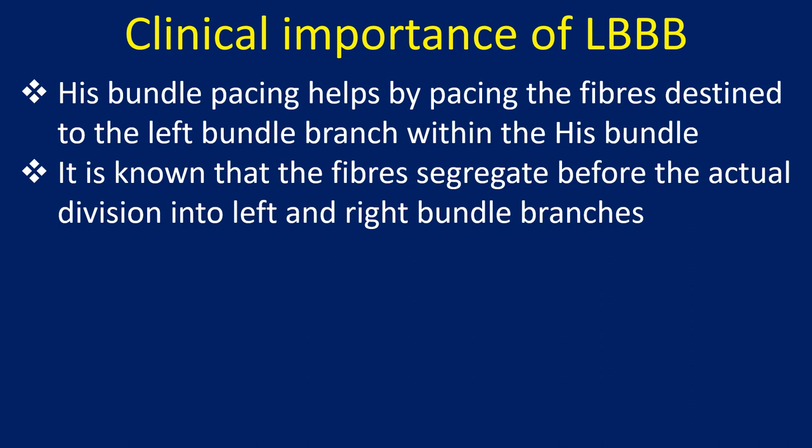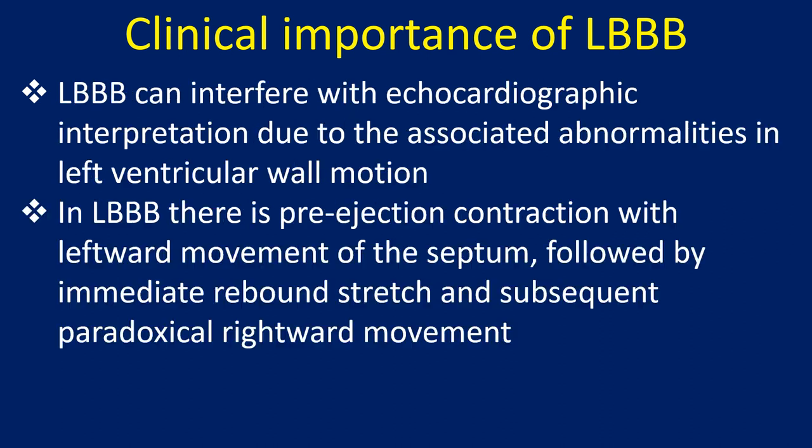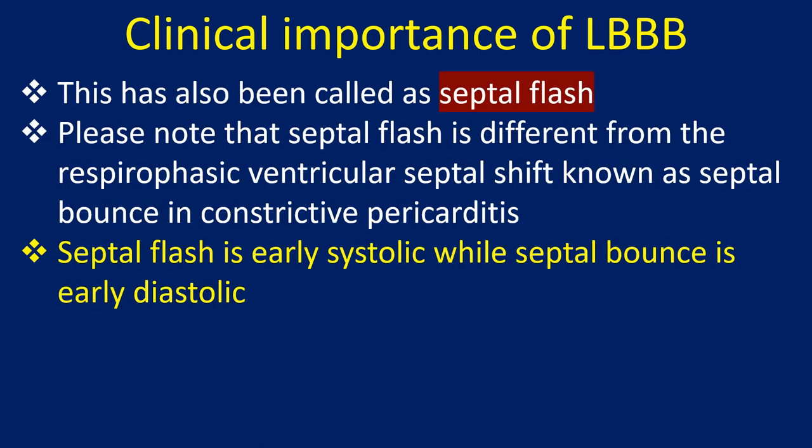It is known that the fibres segregate before the actual division into left and right bundle branches. LBBB can interfere with echocardiographic interpretation due to the associated abnormalities in left ventricular wall motion. In LBBB there is a pre-ejection contraction with leftward movement of the septum followed by immediate rebound stretch and subsequent paradoxical rightward movement, also called septal flash. Septal flash is different from the respirophasic ventricular septal shift known as septal bounce in constrictive pericarditis.